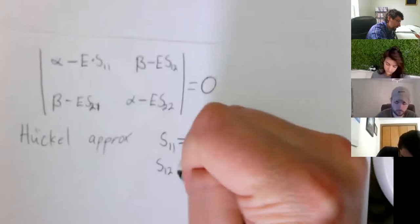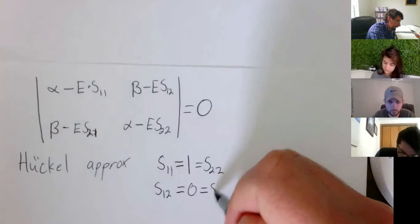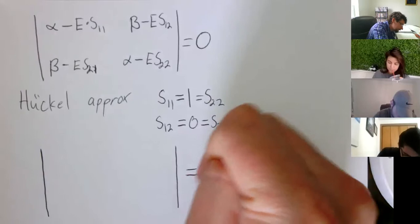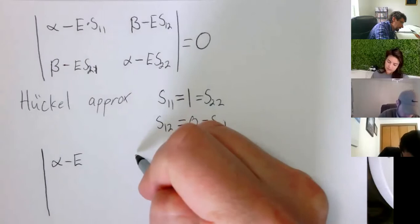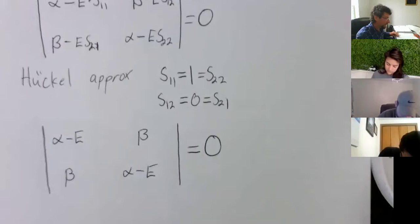Okay. S12? Whoa. S12 is going to equal zero. Yep. And that's also equal to S21. Yeah. Okay. So, now, how is this determinant up here going to change? Alpha minus E. Beta minus nothing. And then it's just beta. It's just beta. Beta, beta. Alpha minus E. Yep. Okay. That looks pretty easy. We can solve that one.